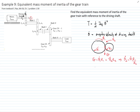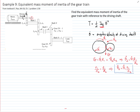We don't have the radius of the gears, but we are given the number of teeth. There is a linear relation between the number of teeth and the radius of the gear. Therefore, we can relate the angular velocity of gear 2 with respect to the angular velocity of gear 1 by multiplying by the ratio of the number of teeth, as shown in this equation.